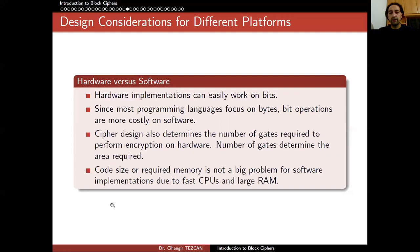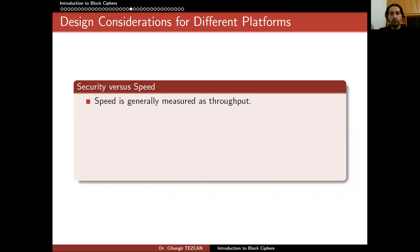This is the topic of another course — I'm actually teaching it this semester. If you're interested, you can watch those videos, also available on this platform, titled 'Lightweight Cryptography for the Internet of Things.' Code size or required memory is not a big problem for software implementations due to fast CPUs and large RAM — desktop computers, laptops, smartphones, and tablets have huge computational power and gigabytes of memory. But for lightweight cryptography, we have very small devices with as little as 64 bytes of memory, so your design should depend on the platform.